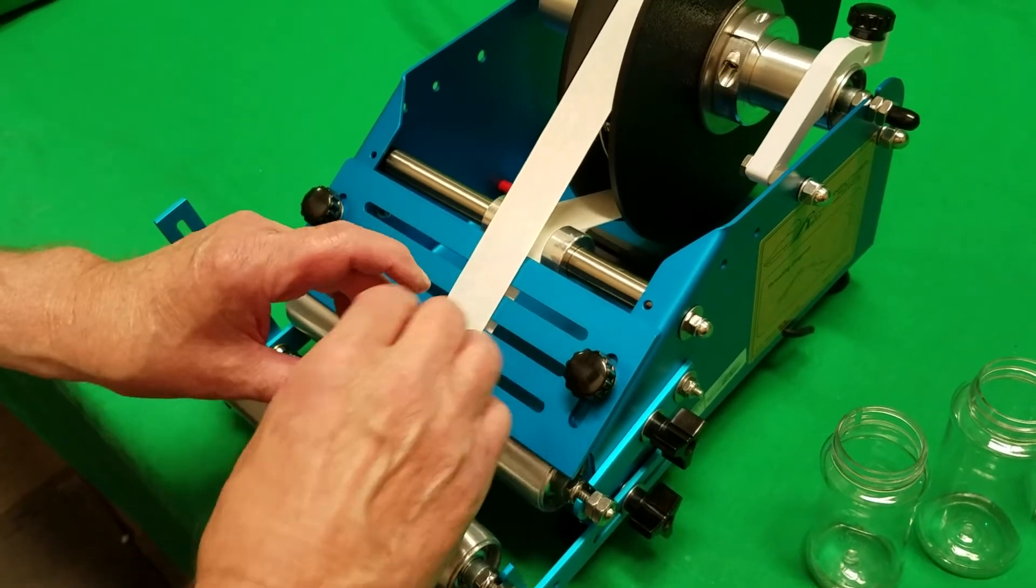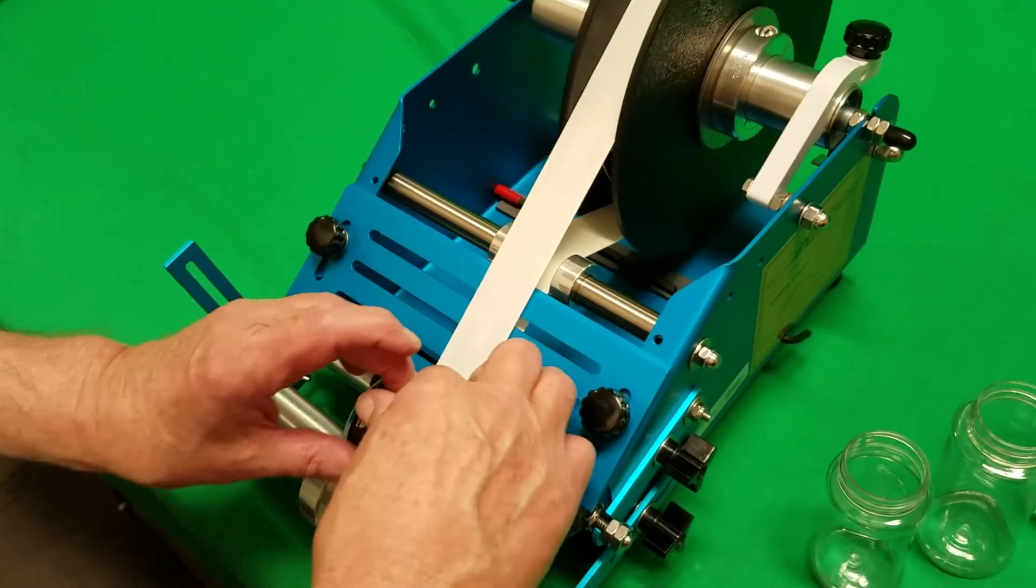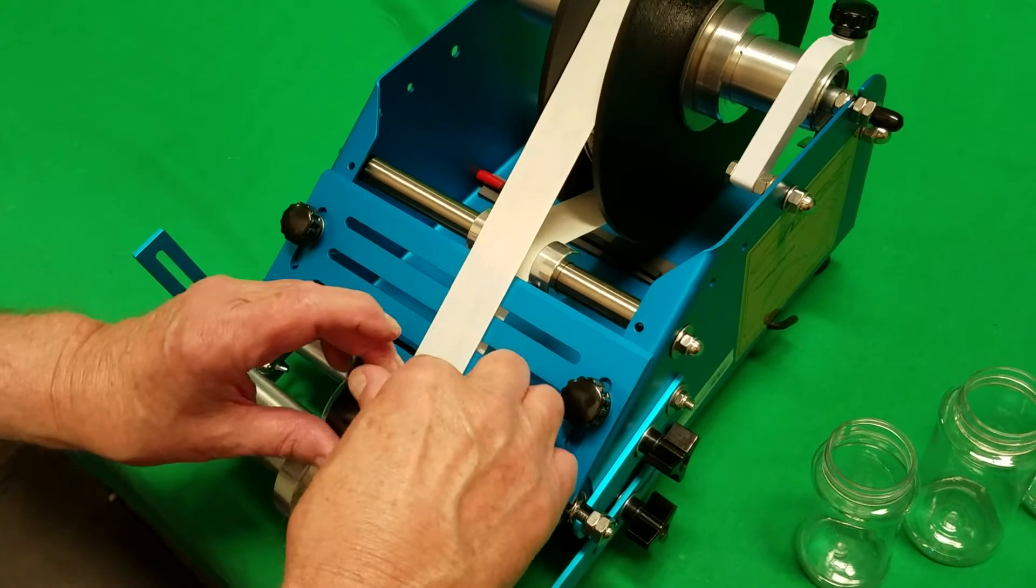Give a slight tug which advances the label and kisses to the container. And then you simply roll the container.